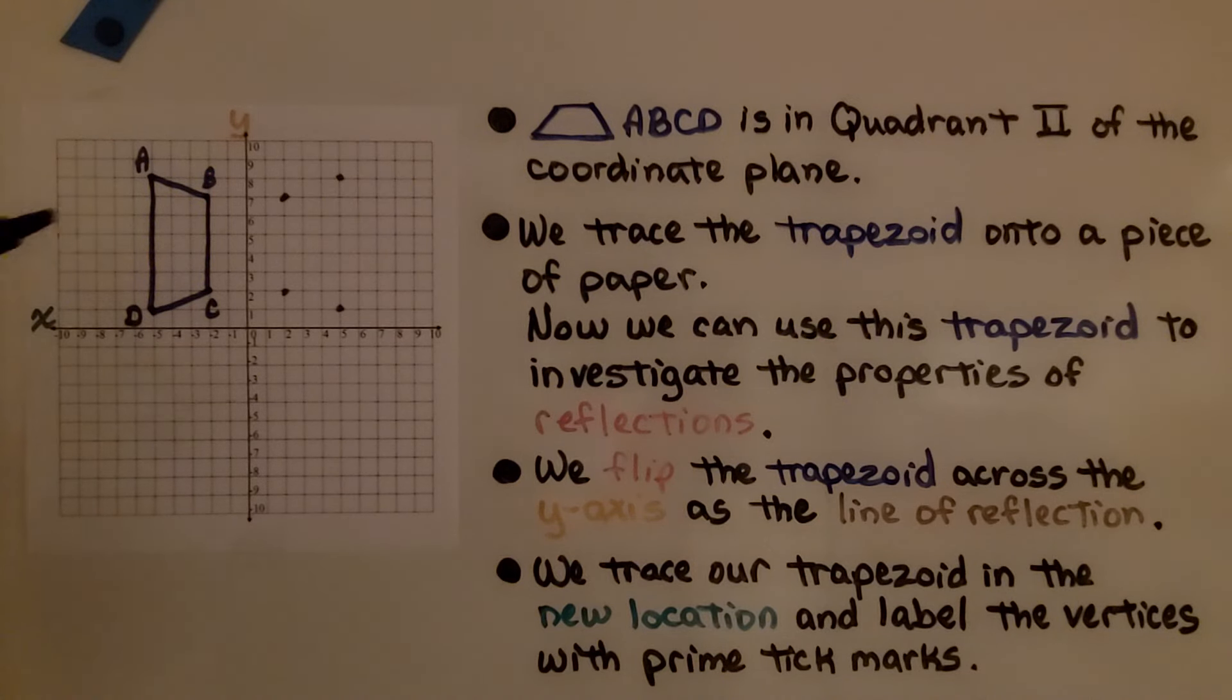Here we have trapezoid ABCD, and it's in quadrant 2 of the coordinate plane. Remember it goes 1, 2, 3, 4. It actually makes a C for coordinate, coordinate plane.